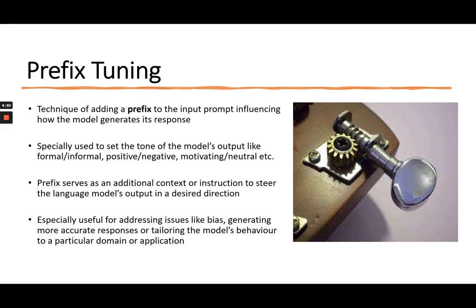For example, if you were to write a product design campaign for a smartphone, you would give a prompt: generate a product description for a smartphone. But if you would like to make it positive, you can add a prefix saying 'positive tone' and then start your main prompt.